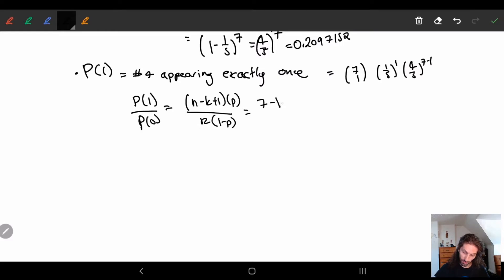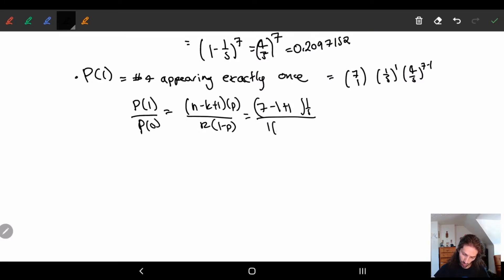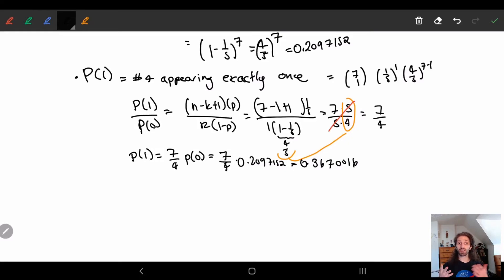So in other words, this is equal to seven minus one plus one times one-fifth over k, which is one, times one minus one-fifth. So this is seven times, so one-fifth I can bring the five down over five. This is four-fifths, so I can flip it and reverse it. I get four times five. So this four-fifths is this here, flipped and reversed. The fives cancel and I get seven-fourths. So in other words, p of one is equal to seven-fourths of p of zero. So we just multiply these two out, seven-fourths times 0.2097152. This gives us 0.3670016. So we have a roughly 37 percent chance that the number four will show up one time.